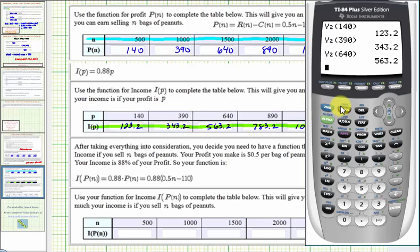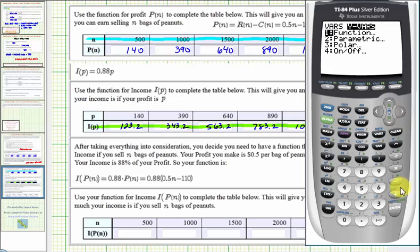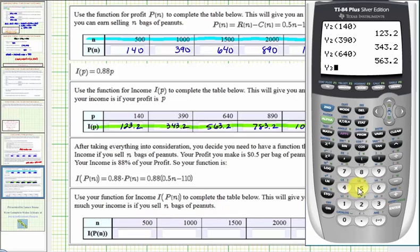So what this composite function will do, it'll allow us to input n, the number of peanuts sold, and it'll give us the final income here in one step. Let's go ahead and verify this. So enter this composite function here in y three. Back to the calculator, we'll press y equals, enter, enter, down to y three. We have .88 times the quantity .5 n, or .5 x for the calculator, minus 110. Close parenthesis.